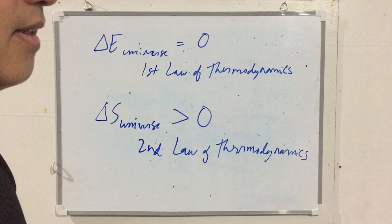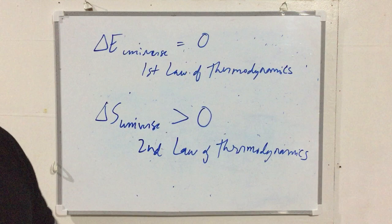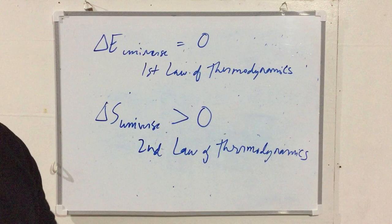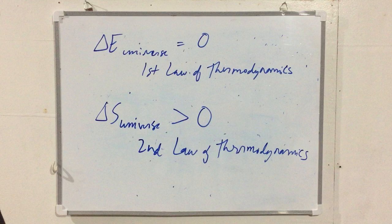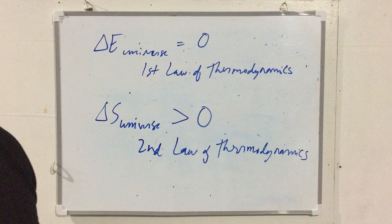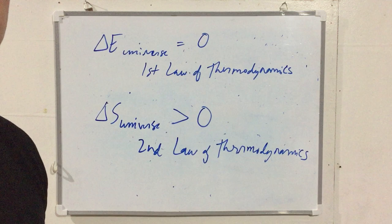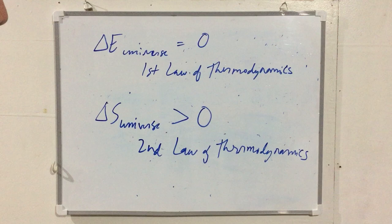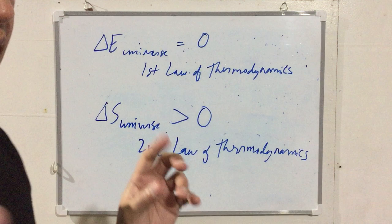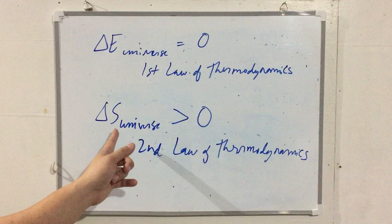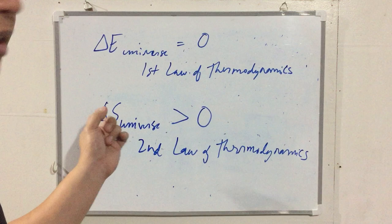However, we can't use delta S alone as a criterion for spontaneity. For example, rain happens spontaneously even though it's a gas-to-liquid transition — which decreases entropy (negative ΔS). Many factors are at work. Delta S is just one part of a more complete criterion for determining whether a process will occur. The universe favors processes that increase its total entropy.